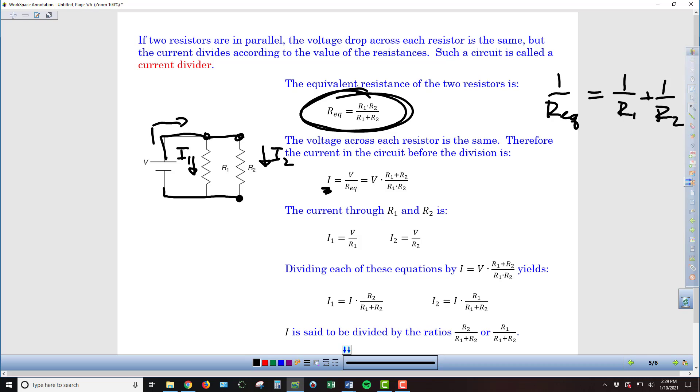So I, the current that's flowing from the battery, is equal to the voltage V supplied by the battery divided by that equivalent resistance. Or if we substitute our expression up here, and then since it's in the denominator, take the reciprocal of it, we can write it as I equals V times R1 plus R2 over R1 times R2.